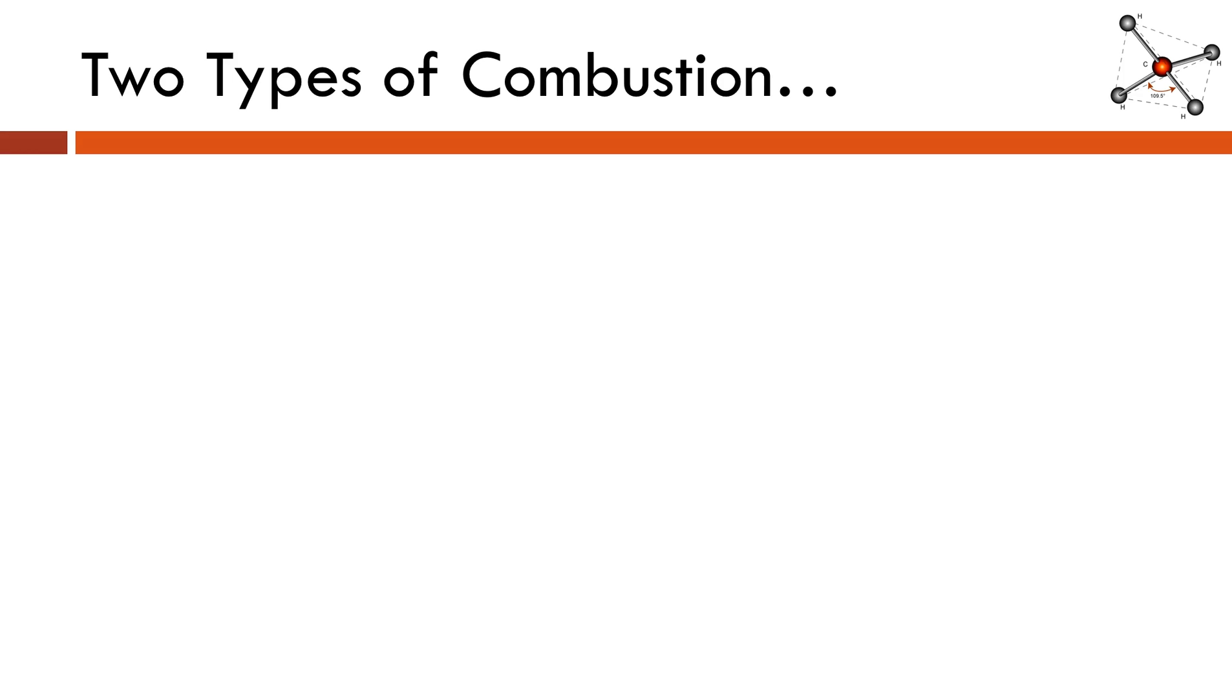We're going to get into a little bit more detail. It turns out there are two different types of combustion. They are very similar, but there is a subtle and important difference. When oxygen is in excess, so generally speaking, if you're burning something out in the open air, like a piece of paper, you have plenty of O2 to go around.